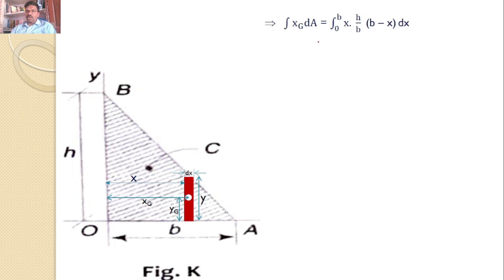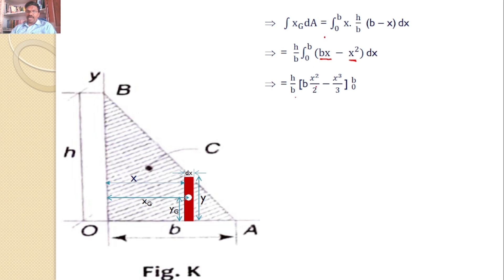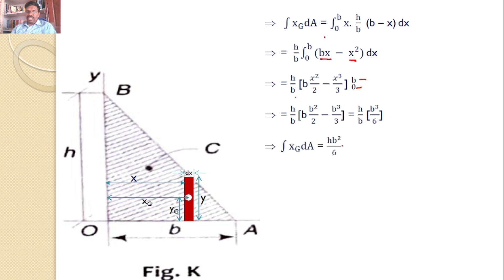H by B is constant so it can be taken outside. Expanding gives H/B times integral from 0 to B of (BX minus X²) DX. Integrating: BX gives B times X²/2, and X² gives X³/3. So we get H/B times [X²/2 minus X³/3] evaluated from 0 to B. After simplifying, this gives H/B into (B³/2 minus B³/3), which equals H/B times B³/6, giving HB²/6. So integral XG dA equals HB²/6.